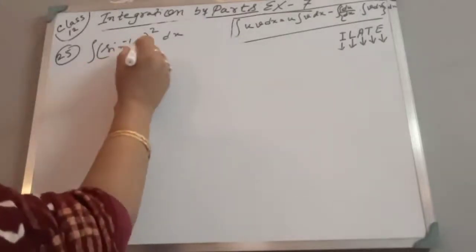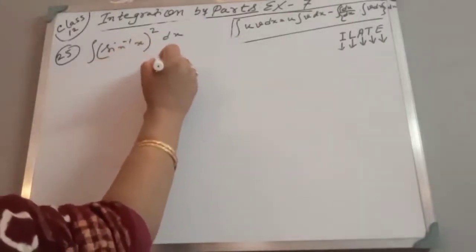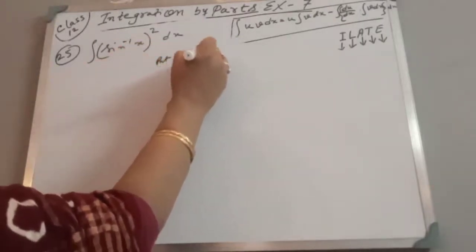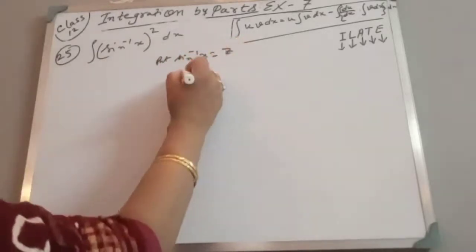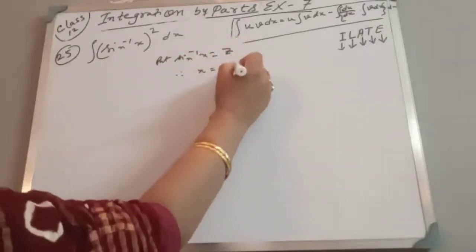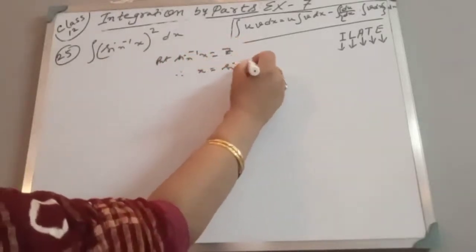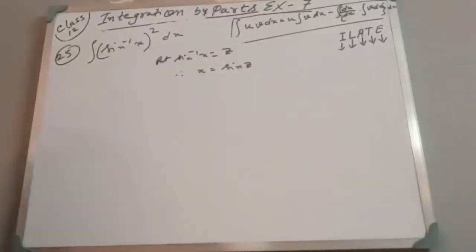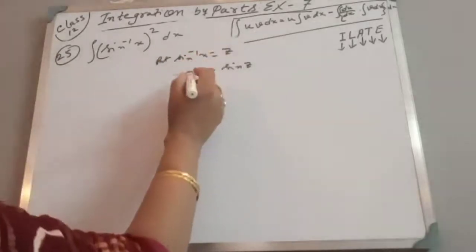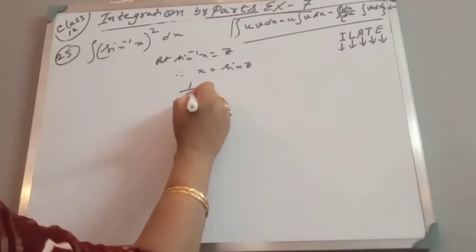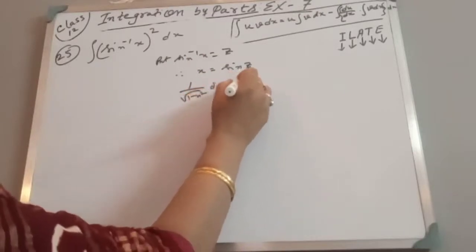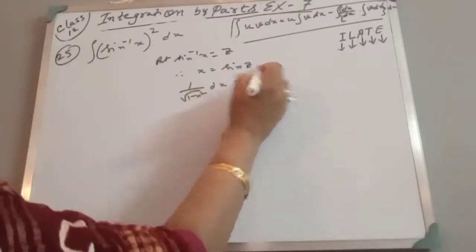We put sin⁻¹x as z. Therefore x equals sin z, and from sin⁻¹x = z we get that 1 over √(1 - x²) · dx = dz.